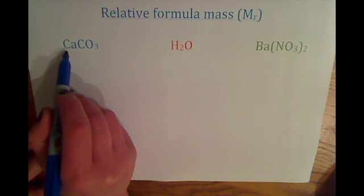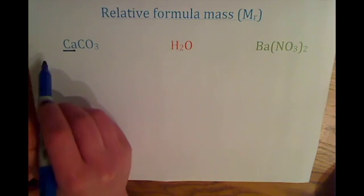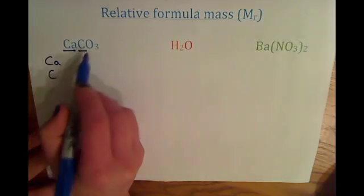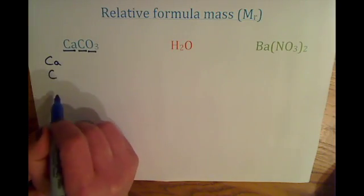So each element starts with a capital letter. You've got Ca for calcium, C for carbon, and O for oxygen.